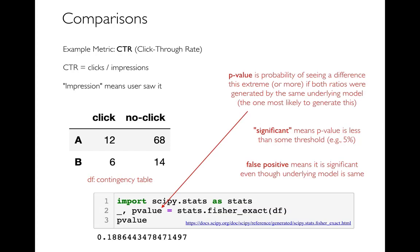What is that p-value telling us? Let's assume the null hypothesis — that there's actually no real difference between A and B, they have the same underlying click versus no-click ratio. If you take two samples there's some noise, so what is the probability we'd see this extreme of a result — 15% for A and 30% for B — just by sampling noise? It turns out that probability was about 18%.